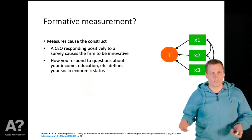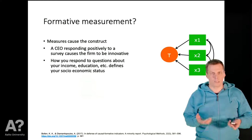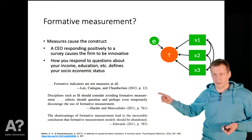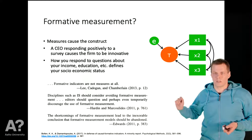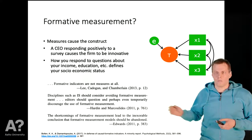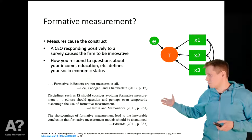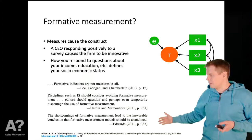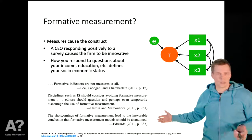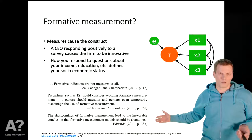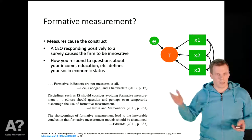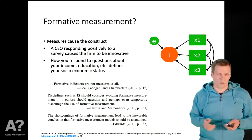There is controversy, and some methodologists say this idea should be abandoned altogether. Lee, Cadogan, and Chamberlain say that formative indicators are not measures at all. Partly, Mark and colleagues say that IS researchers should abandon this approach until we figure out the problems. And Edwards says that looking at the problems of formative measurement leads to the logical conclusion that the approach should be abandoned. So what kinds of problems arise from the idea that indicators cause the construct?